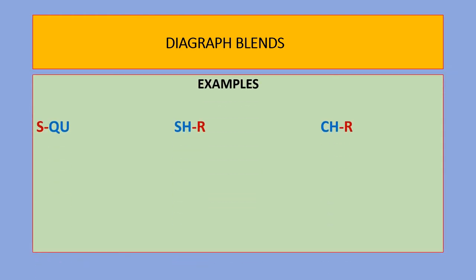These are some of the blends that are formed. When S is added to QU, it produces the sound as in square. When we add R to SH, the sound is as in shred. When R is added to CH, the sound changes to CHR as in Christmas.